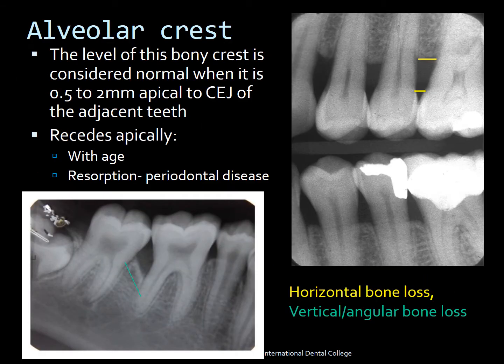Moving on to the alveolar crest — the height of the bone or crestal bone is what is called the alveolar crest. It is considered normal when it is about 0.5 to 2 mm apical to the CEJ of the adjacent teeth. Looking at this radiograph, the yellow mark indicates the CEJ, which is the cemento-enamel junction. This is a perfect example of bone loss — horizontal bone loss — where the actual bone level is seen to be much more apical than normal. Anywhere between 0.5 to 2 mm from the CEJ is still considered normal; anything beyond that is considered bone loss.